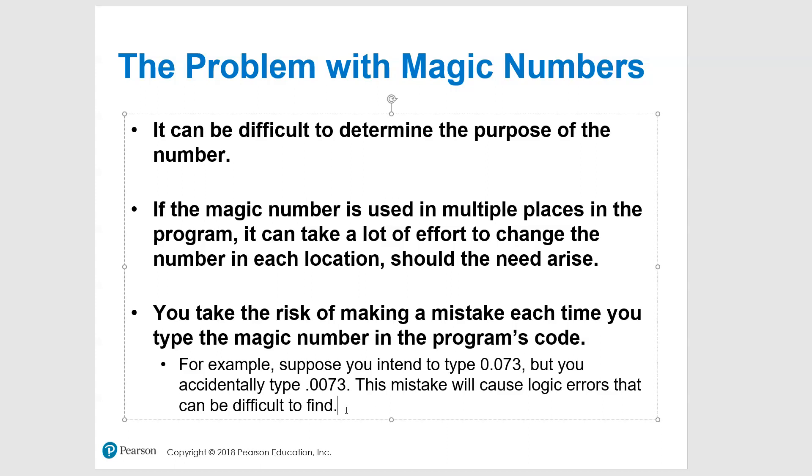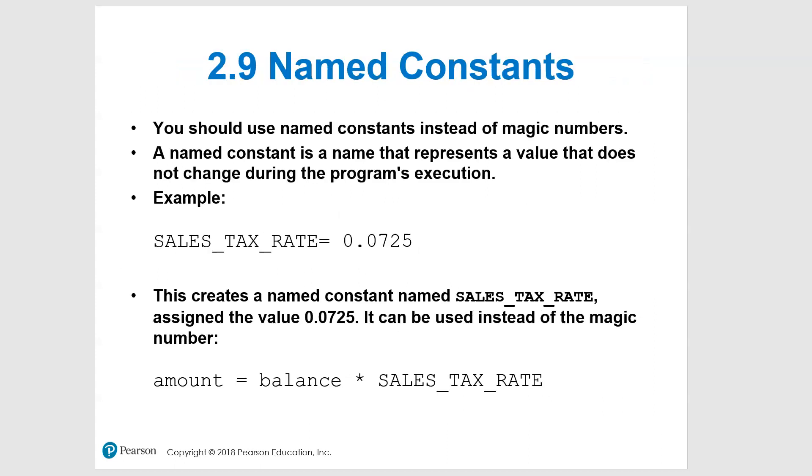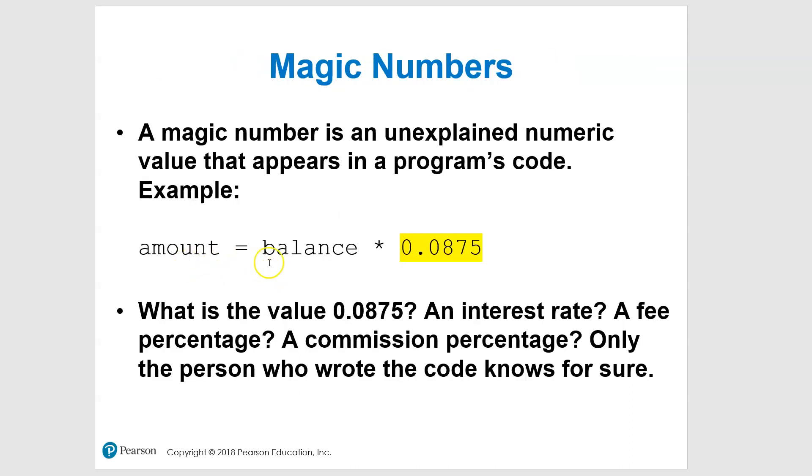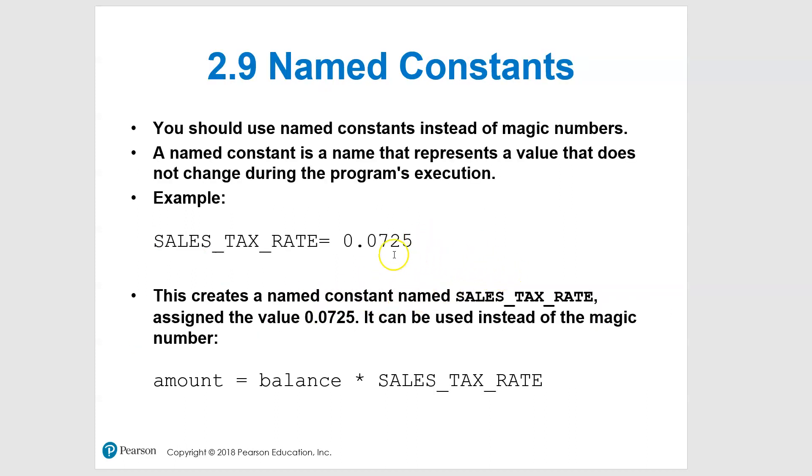Well, we are going to use something called a constant. Section 2.9 is a short section but very important for things like this. So instead of having this number, we're going to use a named constant to define it at one place in the code, typically at the very top of the program.